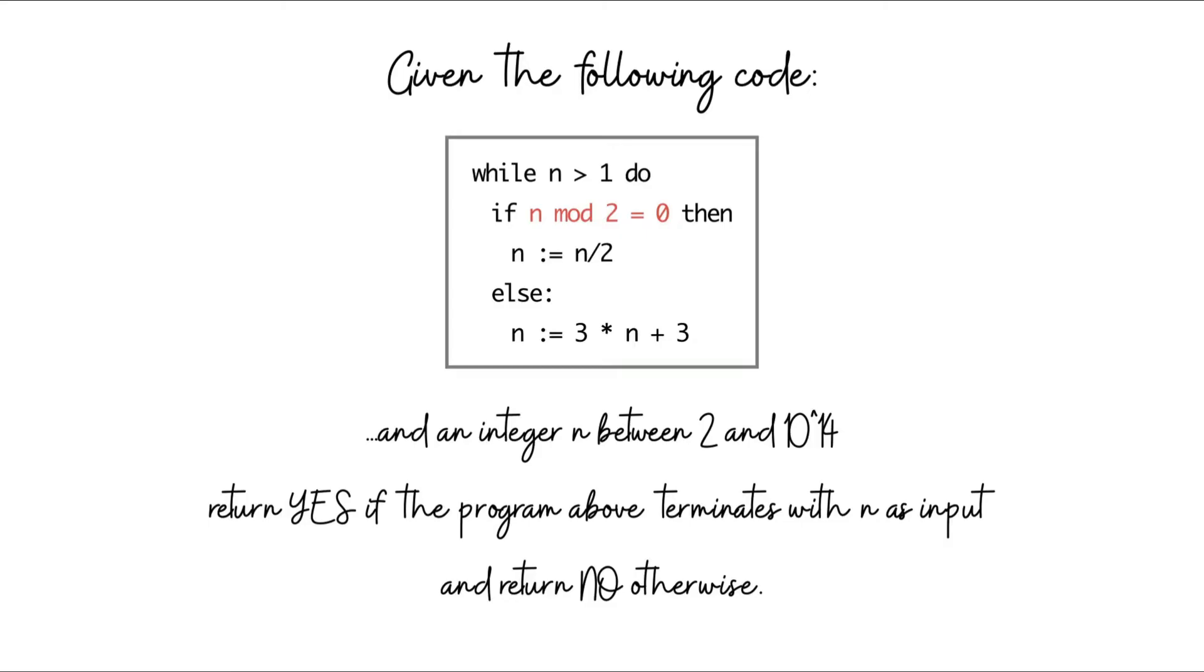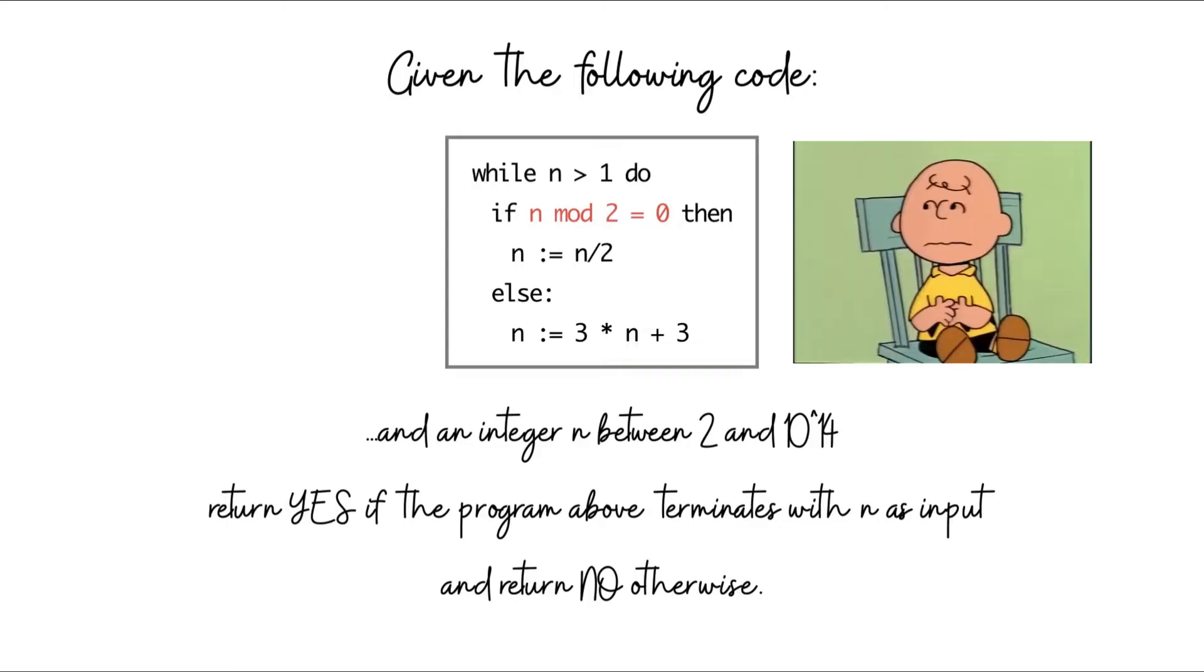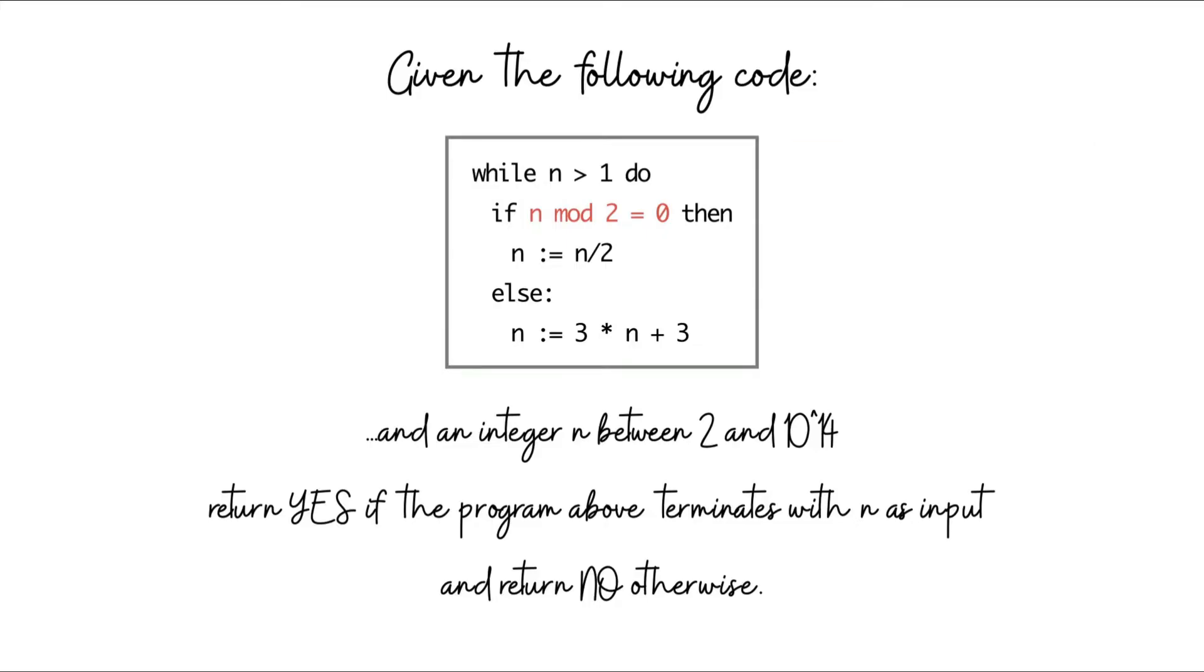Fundamentally, the issue is that just because your program did not terminate in the first so many steps, that's not enough evidence to conclude that it's never going to terminate. It seems like the real task for us is to identify some pattern on the numbers n for which this code does not terminate, and then use that pattern to answer the question.